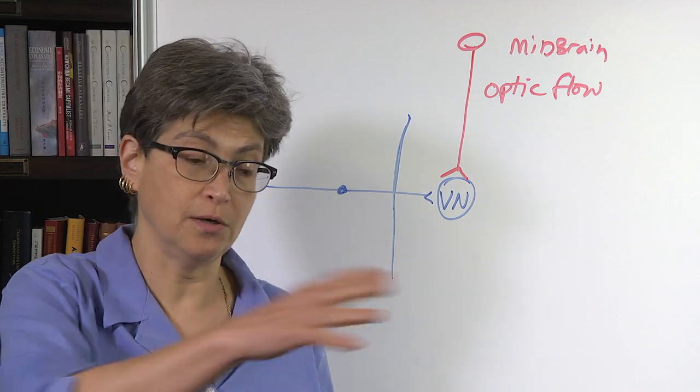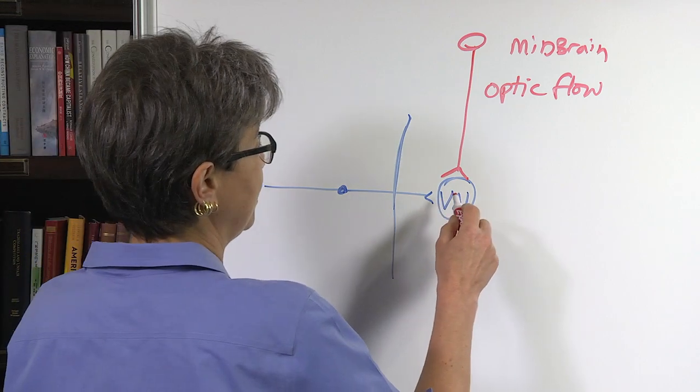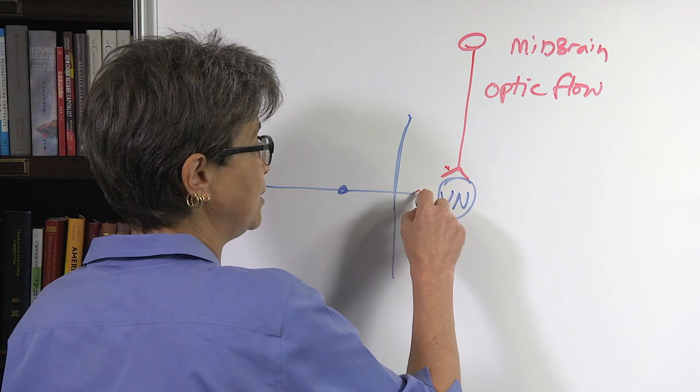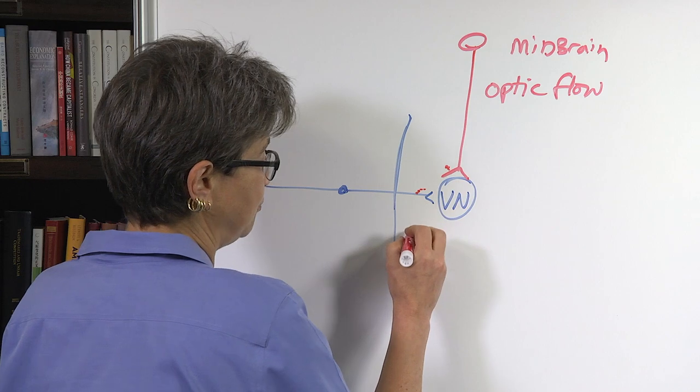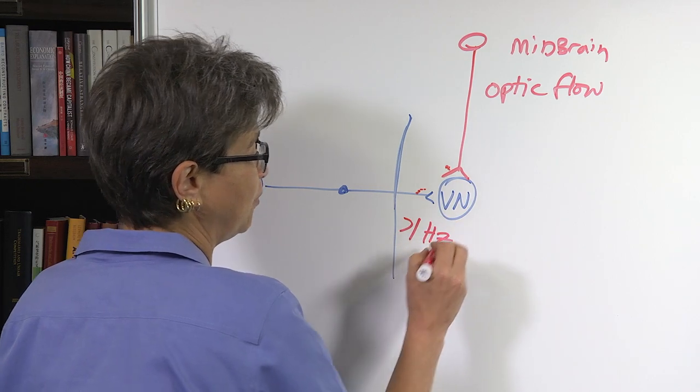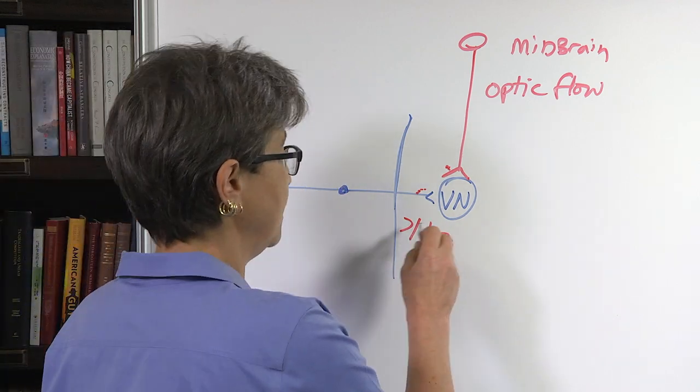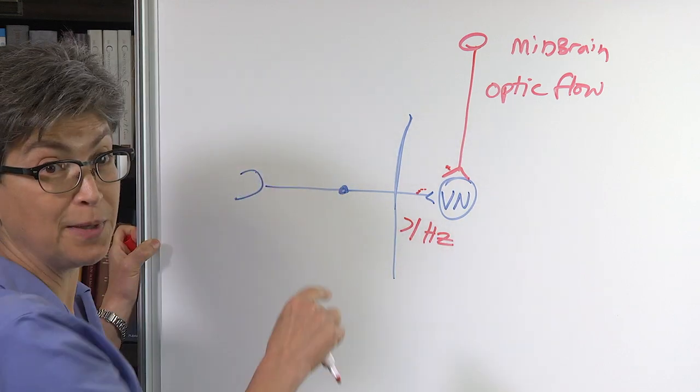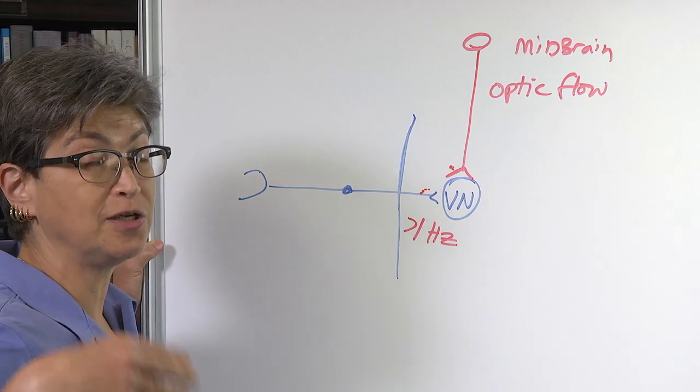Or if there's something blowing across that can also produce it. But the important point is that this vestibular neuron cannot tell the difference between these two inputs and what this input from the vestibular system only operates above about one hertz, maybe above two hertz, but below, certainly below one hertz. There's no information coming from here because the acceleration is too small, too low magnitude to actually excite the hair cells.